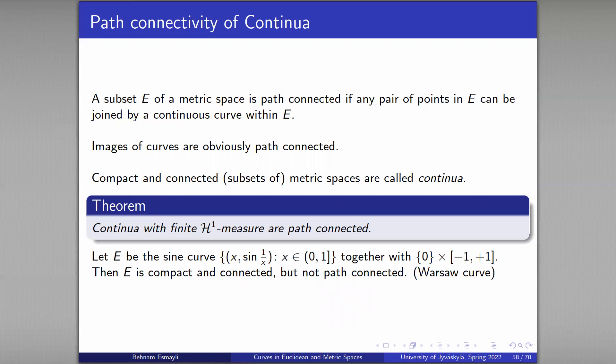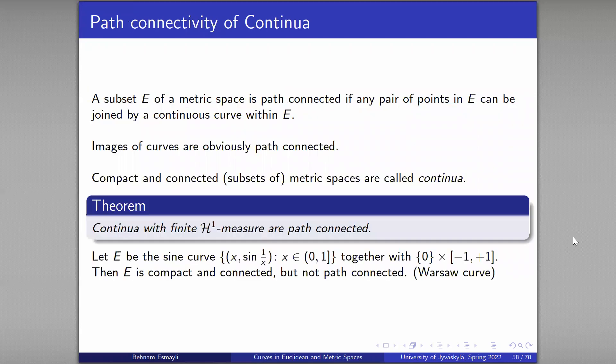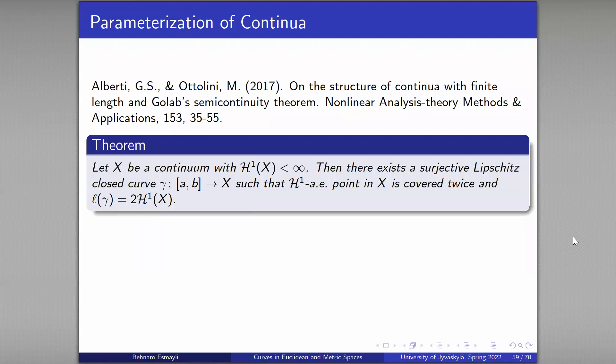So here is an obvious counterexample to the possible claim that connected and compact implies path connected. That's why the theorem is interesting, that having finite H^1 measure plus those implies path connected. It's kind of a surprising result to me. I don't exactly see how finiteness of this H^1 measure has anything to do with path connectivity. It hasn't really settled down in my intuition. This result is a positive step towards saying that certain sets are images of curves because path connectedness was necessary and now we have it.